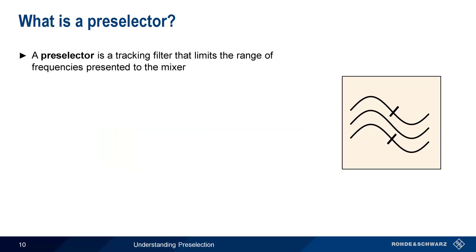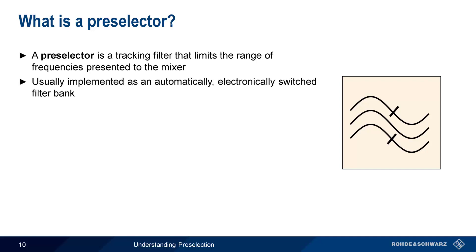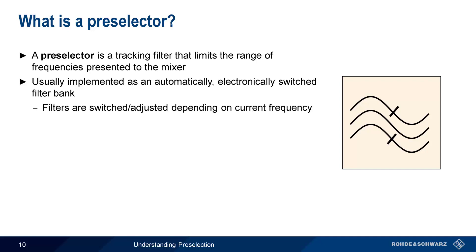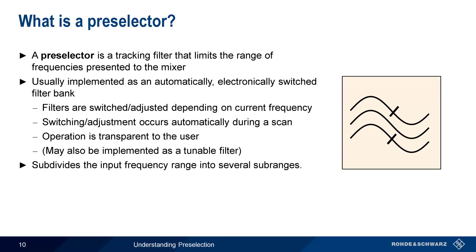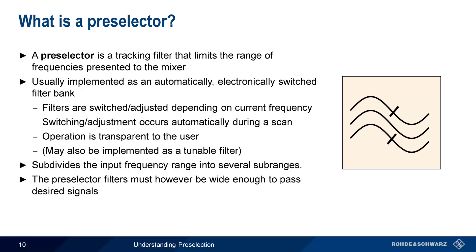A preselector is a type of tracking filter that can be used to limit the range of input frequencies presented to the mixer. Preselectors are usually implemented as an automatic, electronically switched bank of filters. The preselector selects or adjusts which filter to use based on the current frequency of the instrument, and automatically switches from one filter to another when the operating frequency changes — transparently, without any user intervention. Note that even though most preselectors are implemented as a bank of filters, a preselector could also be implemented using a single, tunable filter. Due to the way a preselector operates, the input frequency range is essentially subdivided into several sub-ranges, one per filter. There is however a practical limit on the number and minimum width of these filters, since the preselector filters must still be wide enough to pass any desired signals without distortion.